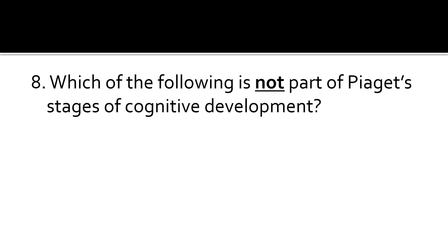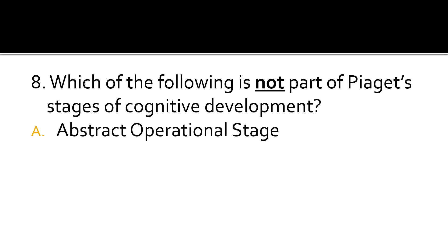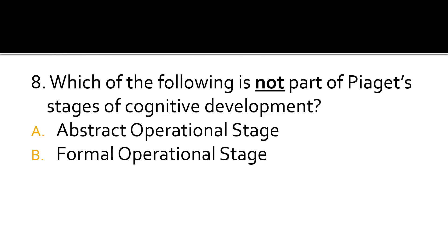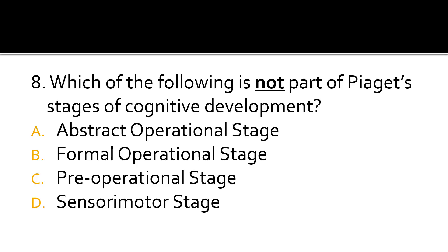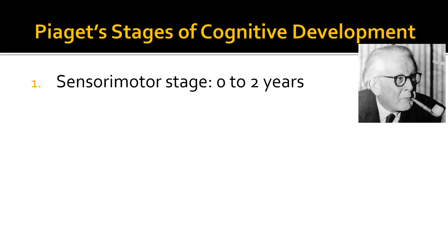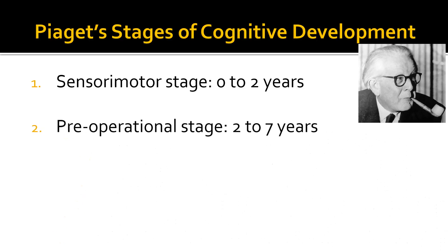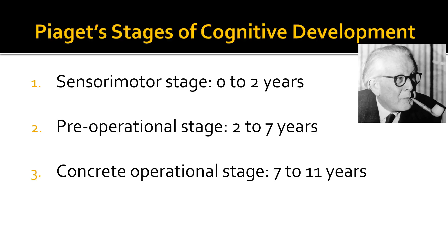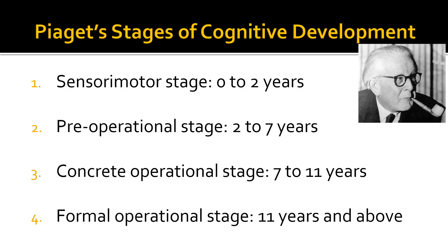Question 8. Which of the following is not part of Piaget's stages of cognitive development? Is it the abstract operational stage, formal operational stage, pre-operational stage, or sensory-motor stage? The correct answer is A: abstract operational stage. The actual stages are the sensory-motor stage, the pre-operational stage, the concrete operational stage, and the formal operational stage.